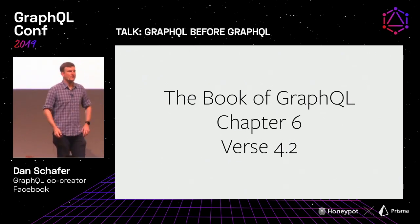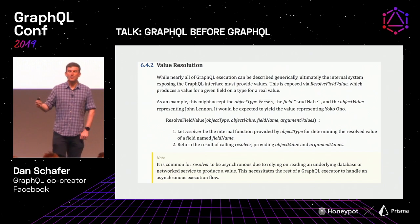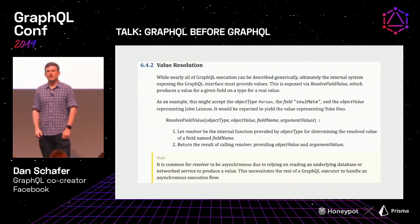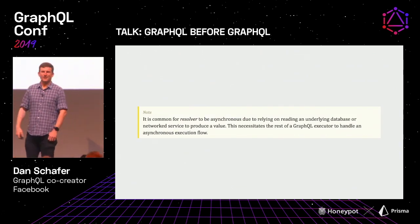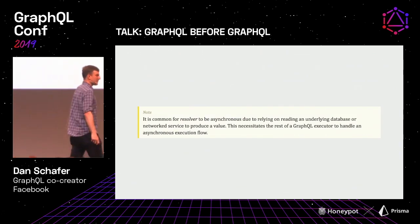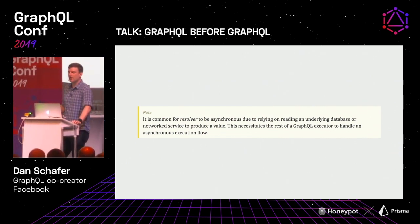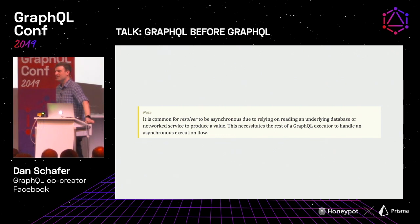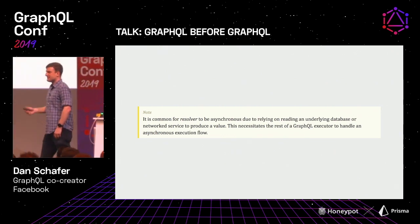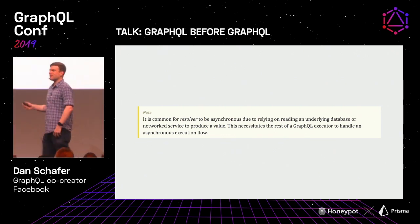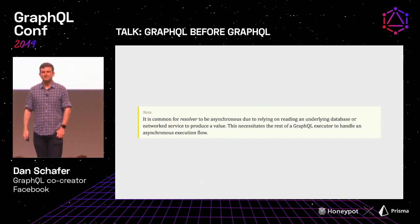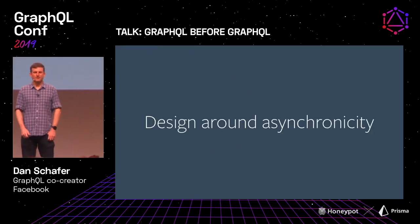If you turn to the GraphQL spec, chapter 6, the value resolution section reads: 'It is common for a resolver to be asynchronous due to relying on reading an underlying database or network service to produce a value. This necessitates the rest of a GraphQL executor to handle an asynchronous execution flow.' The GraphQL executor has to be asynchronous because your server abstractions are going to be asynchronous. Design it around asynchronicity.